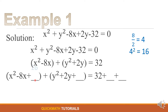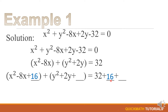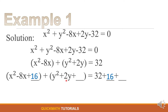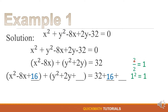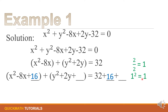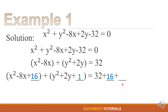So we will add 16 here on the left, and since we add 16 to the left side we will also add 16 to the right side. Next, for the group of y, focus on the coefficient of the middle term: we have 2, so 2 divided by 2 equals 1, and 1 squared equals 1. So we will add 1 to the y group and, to be fair, we will add 1 to the right side as well.